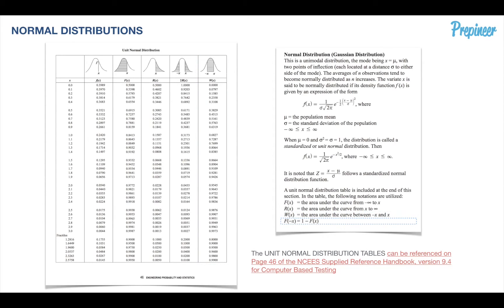That final piece, F of negative x, simply means that if you have a negative value — a negative discrete number — it's simply 1 minus the positive Fx. I'll explain that further as we move forward.